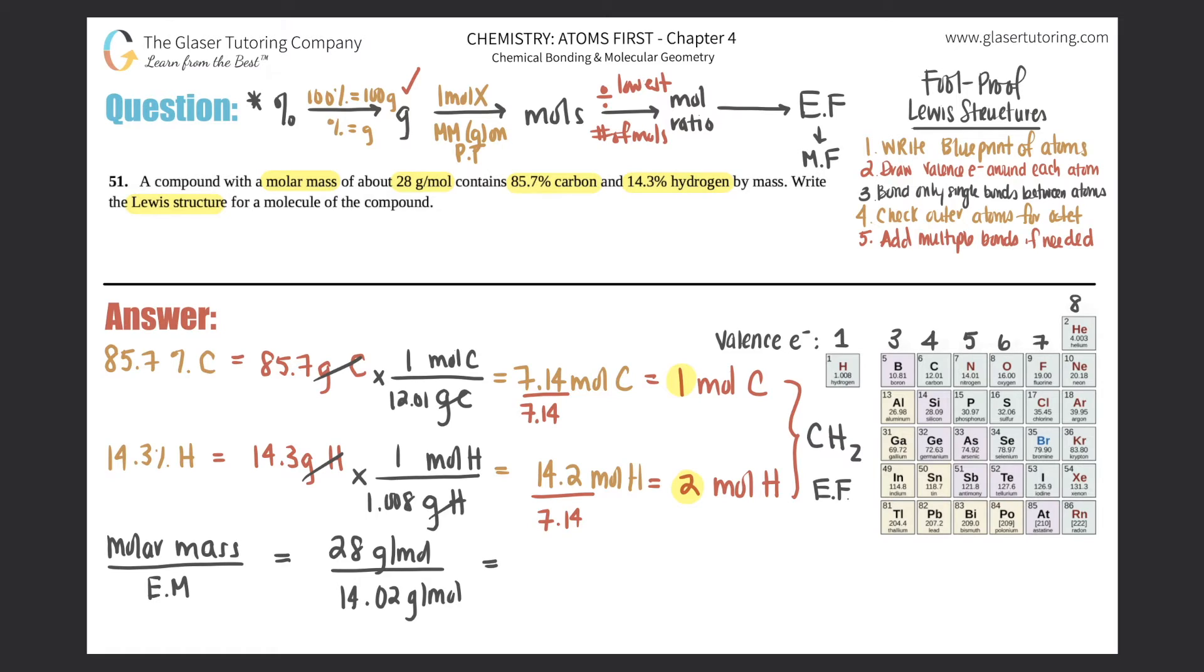And now you would divide those, so 28 divided by 14 roughly is going to be 2. So what does that mean? This means that your molecular formula is 2 times the empirical formula.